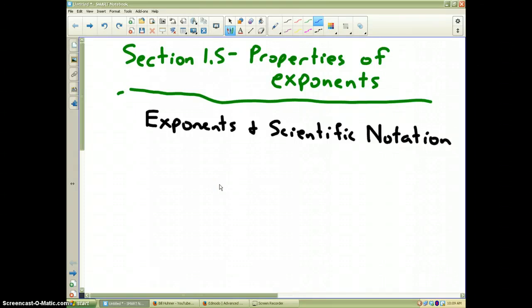The final type of problems you'll see in section 1.5 Properties of Exponents deals with scientific notation. Now, we have all seen and know how to write numbers in scientific notation. You've done this for a few years. So I'm going to look at a problem that involves the simplification, without a calculator, of numbers in scientific notation.